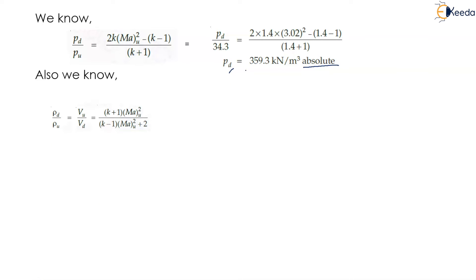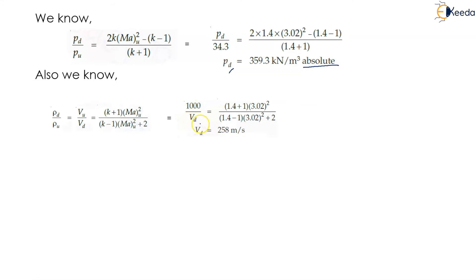We also know Rho D upon Rho U equals VU upon VD, which equals (K plus 1) times Ma squared upstream, divided by (K minus 1) times Ma squared upstream plus 2. So 1000 divided by VD equals (1.4 plus 1) times 3.02 squared, divided by (1.4 minus 1) times 3.02 squared plus 2. Therefore the velocity downstream is 258 meters per second.